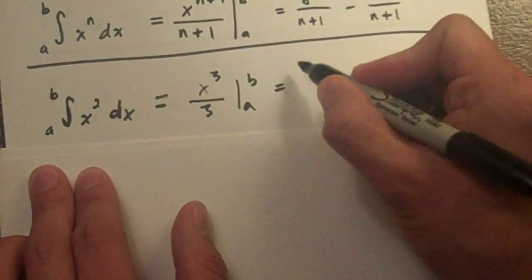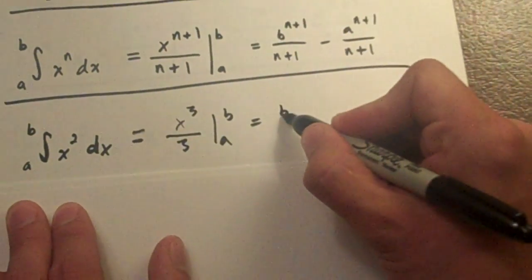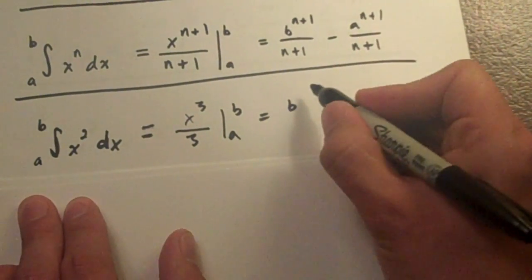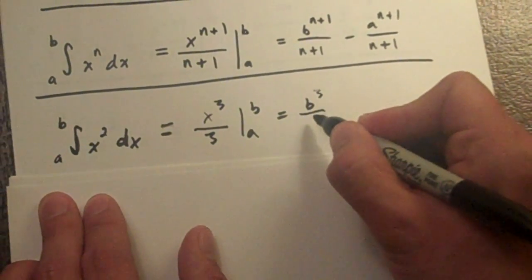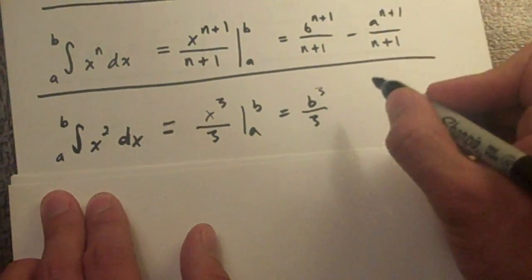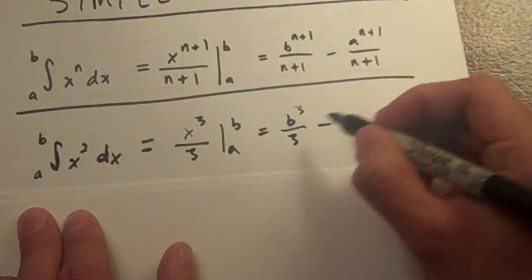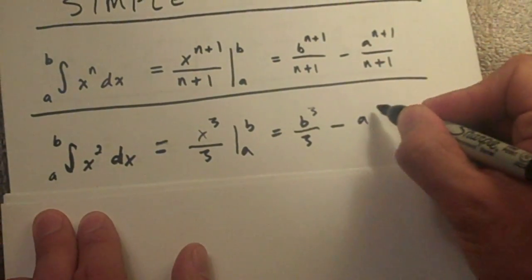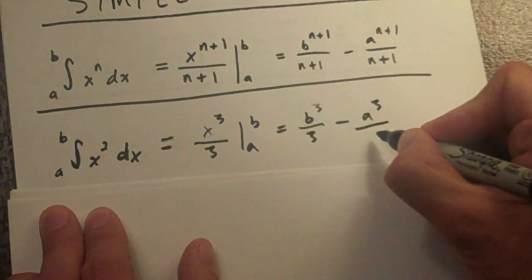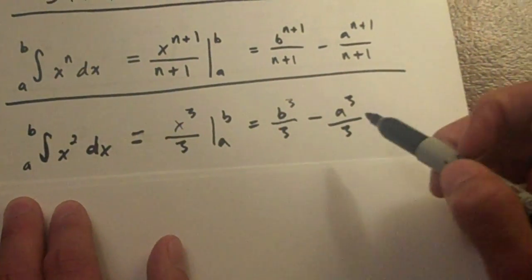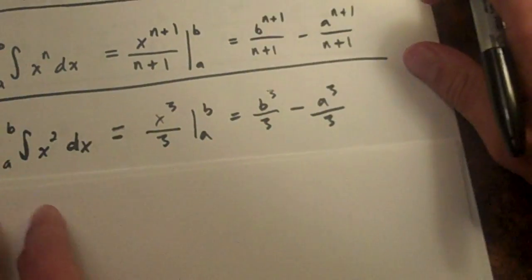So then we take our b to the n plus 1 which is 3, all over n plus 1 which is 3, minus our a, n plus 1 which is 3, all over 3. So that's your final answer for what we have, and now what we're going to do is we're going to fill in some more blanks.